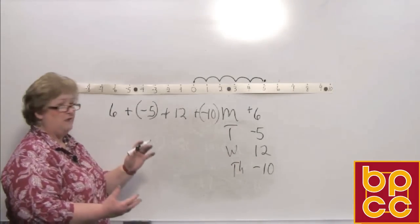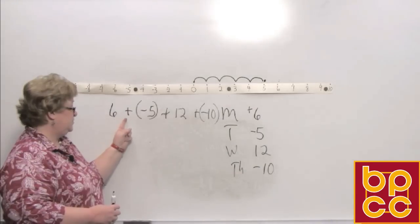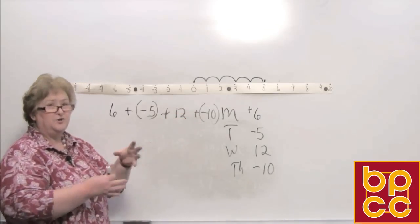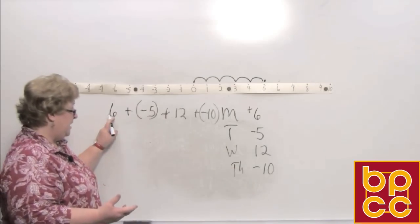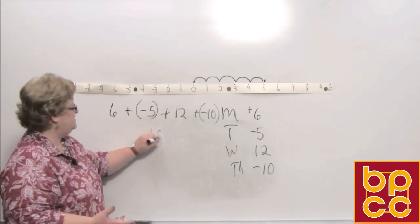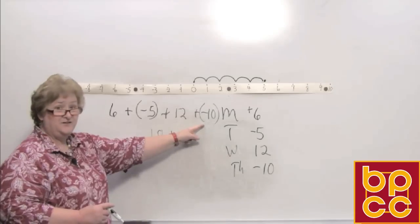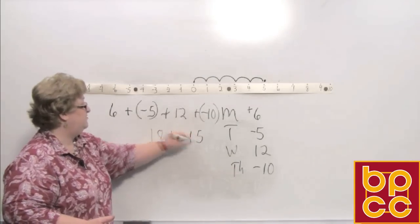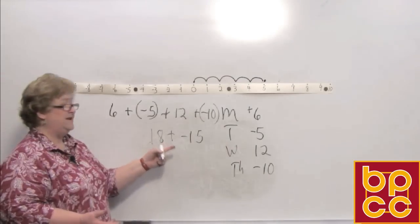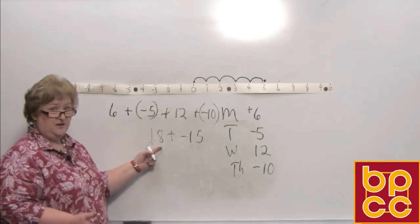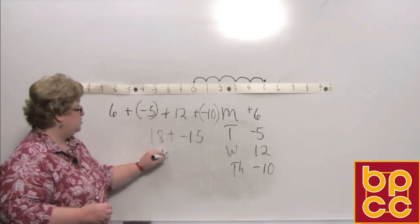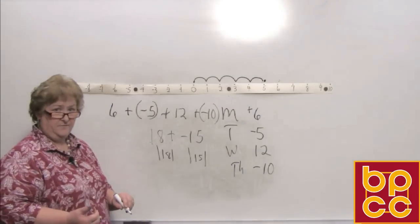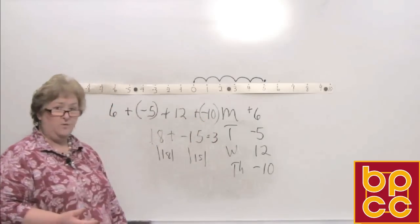Some people go left to right taking two numbers at a time. I like to group the positives and the negatives. Positive 6 and positive 12 gives positive 18. Negative 5 and negative 10 — negative and more negative — gives negative 15. Now I have 18 plus negative 15. There's more positive than negative, so the answer is positive. The difference between the absolute value of 18 and the absolute value of 15 is 3, so the answer is positive 3.